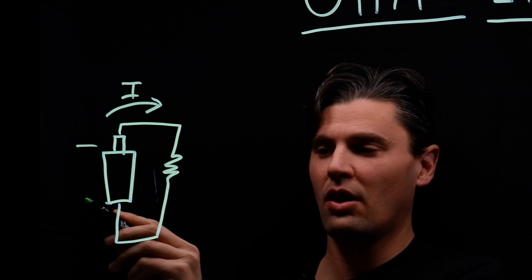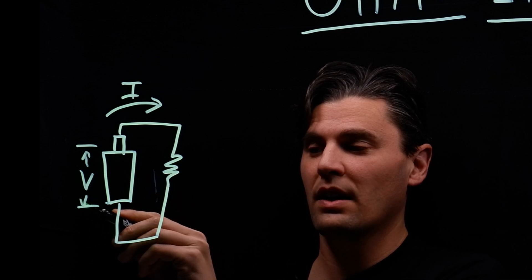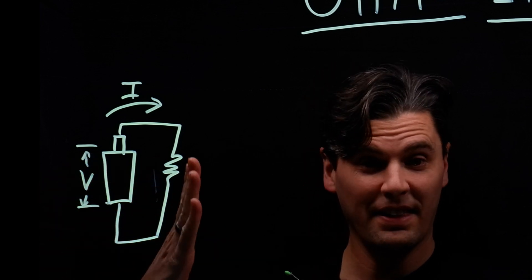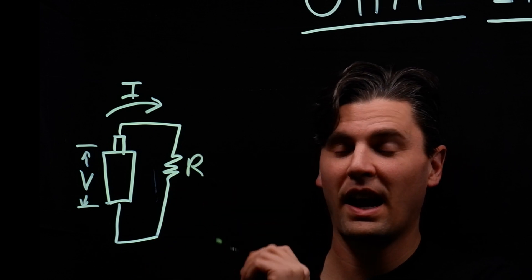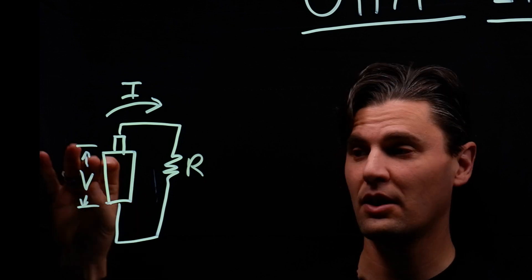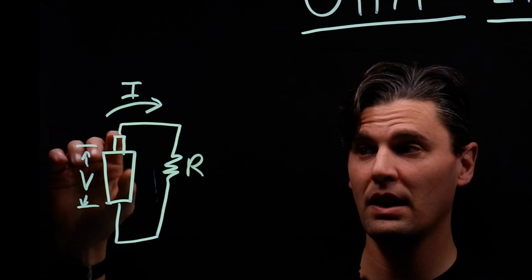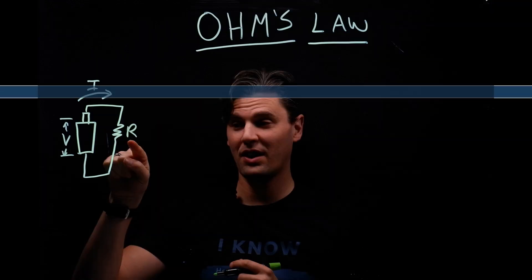And then there's a potential across this battery, so a voltage, which is why the electrons want to move in the opposite direction that we draw the current. And then we have a resistor here. So how are these three things related? The voltage across the battery, the current that runs through the circuit, and then the resistor here.